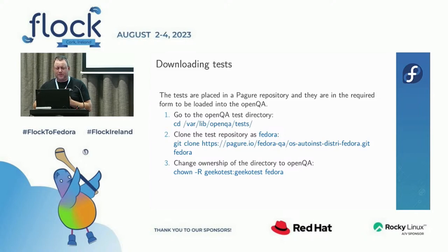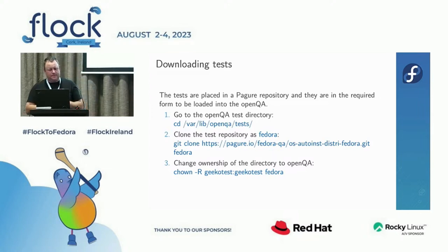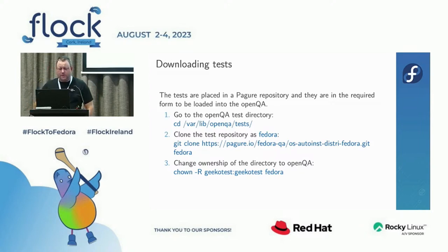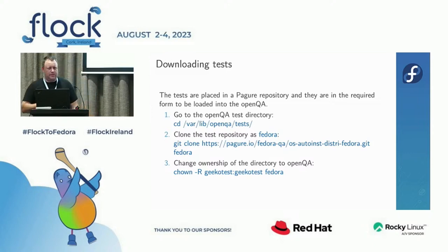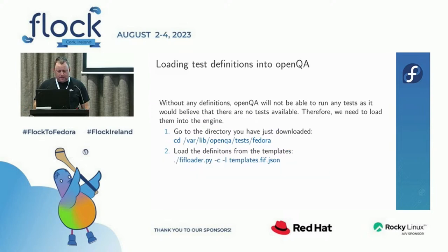Go to the Pagure repository, download the tests into /var/lib/openqa/tests, then git-clone the repository as 'fedora' and change the ownership to geekotest. Geekotest is the OpenQA user, and it needs permissions in those OpenQA test directories. Once that's done, we have the tests.